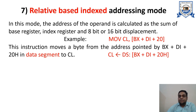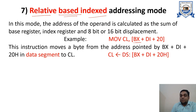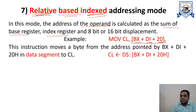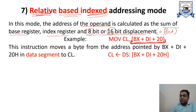Next is relative based index addressing mode. Here three different modes are combined: relative, based, and indexed. In the based mode we have a base register, in the indexed mode we have an index register, and in the relative mode an offset address is present. By adding all three we get the effective address. The address of the operand is calculated as the sum of the base register, index register, and the displacement — either 8-bit or 16-bit. Together, the addition of all these gives the effective address. This address belongs to the data segment and moves to CL, the lower 8 bits of register C.